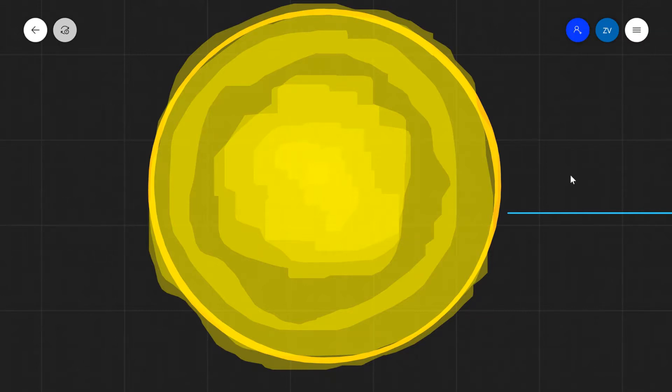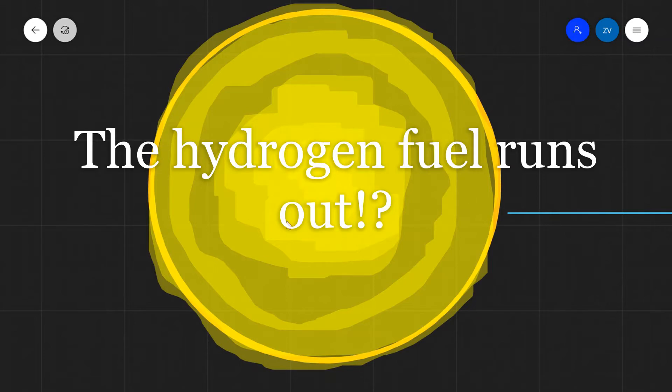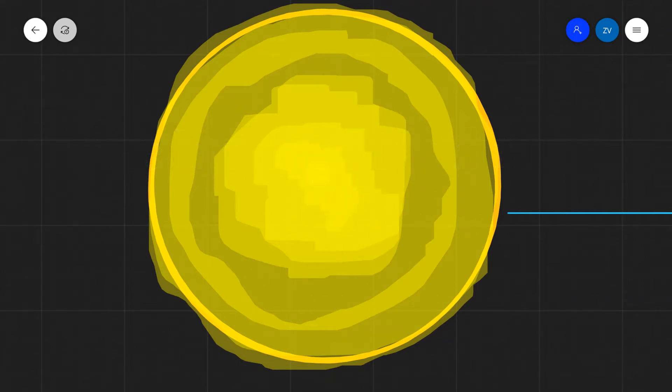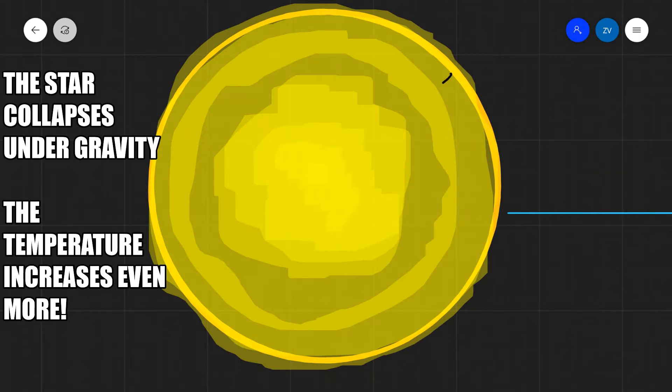Eventually, the hydrogen that is fueling the radiation pressure will run out. When the hydrogen runs out, the radiation pressure is suddenly taken away and the star collapses even further due to the immense gravitational forces acting on it.